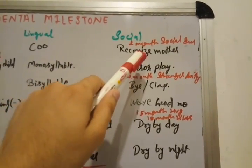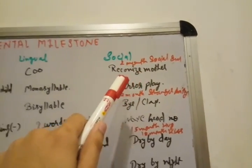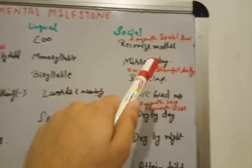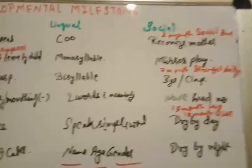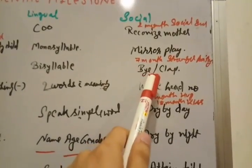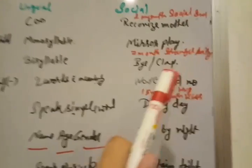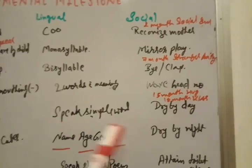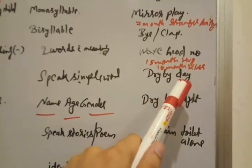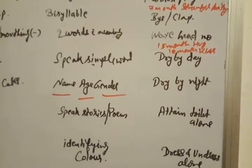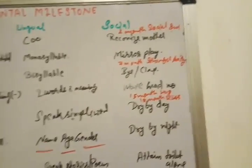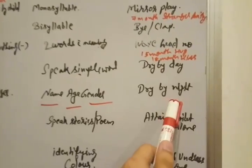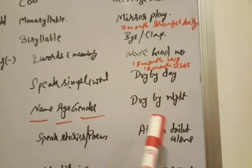In 3 month of age, social includes recognize the mother. In 6 month of age, child will play mirror play. At 9 month of age, child says bye bye and claps. In 1 year of age, child is dry by day. He is not able to do toilet. He is not doing toilet in his dress. And at 3 year, he is dry by night. His bed is wet.